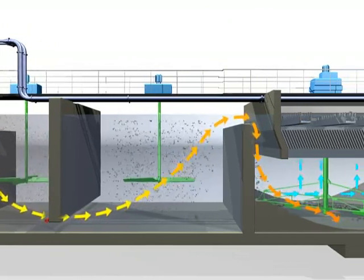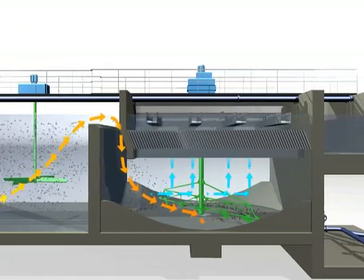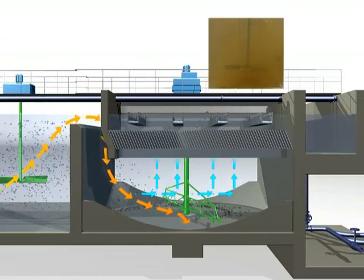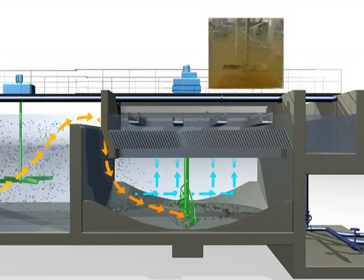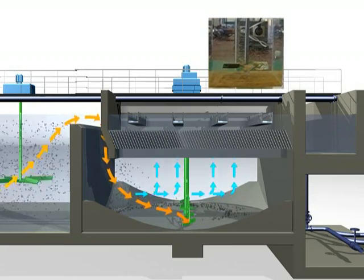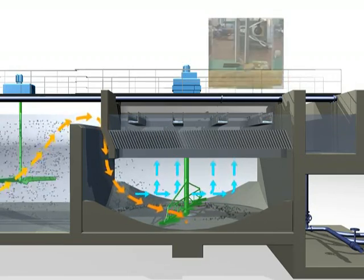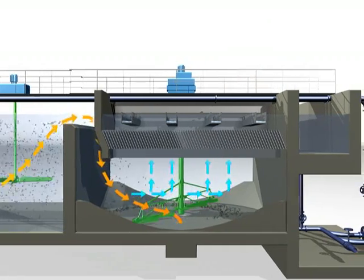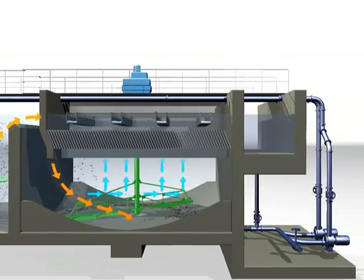The fully flocculated water then enters the clarifier where the microsand ballasted flocks quickly settle to the bottom while the clarified water rises through the lamella settling zone. High-quality clarified water leaves actiflow through a series of collection troughs.